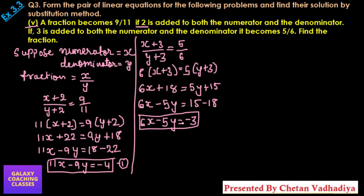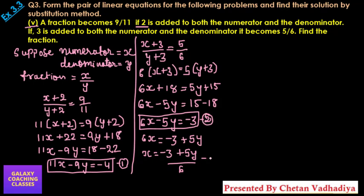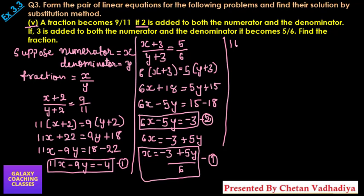Now we need to solve this by the substitution method. First, I am going to find the value of x from equation 2 and put it in equation 1. From equation 2: 6x = minus 3 plus 5y, so x equals (minus 3 + 5y) by 6. Call this result number 1. Now I am going to substitute this into equation 1: 11 times (minus 3 + 5y) over 6, minus 9y, equals minus 4.